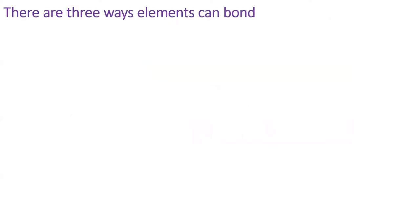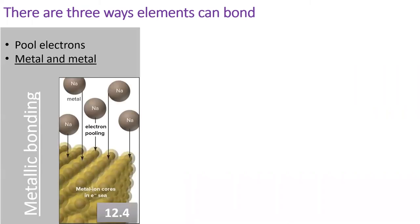There are three ways that elements can form bonds to other elements. The simplest form of bonding is metallic bonding, which only happens between metals. We'll cover this kind of bonding at the end of the term in section 12.4.